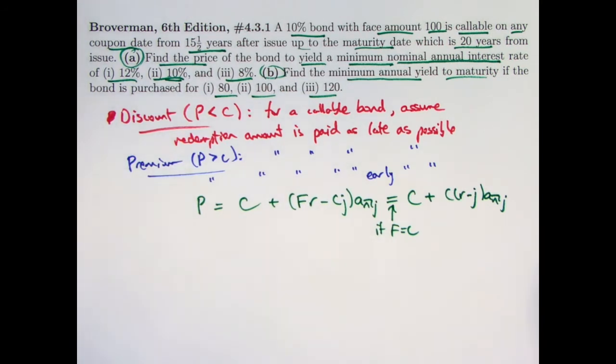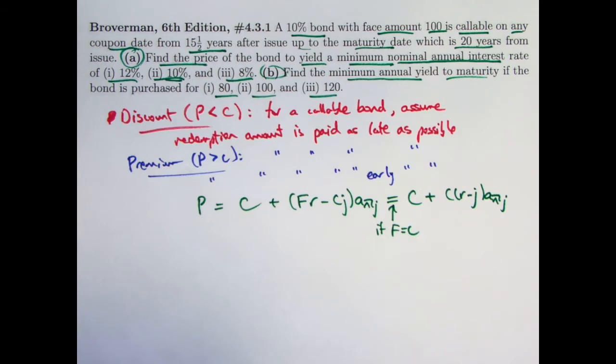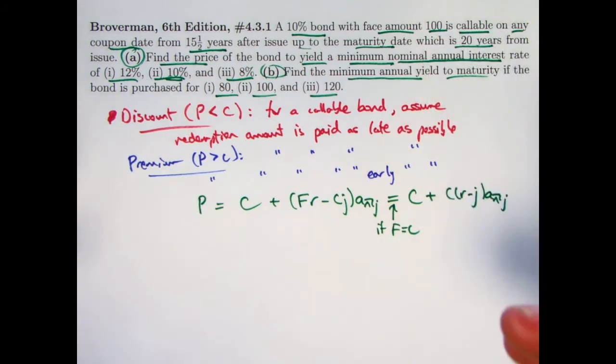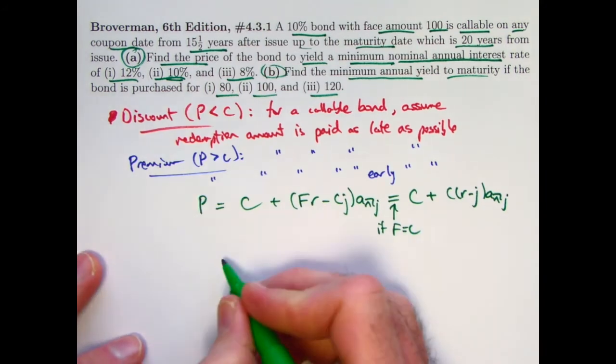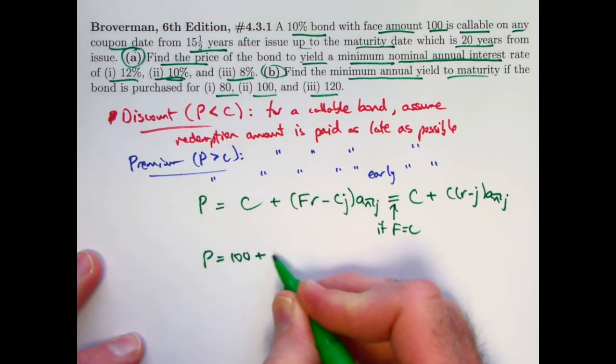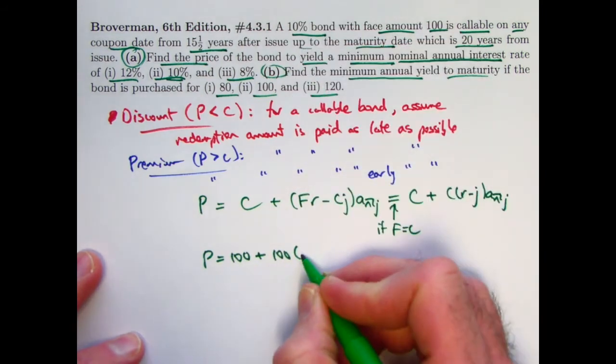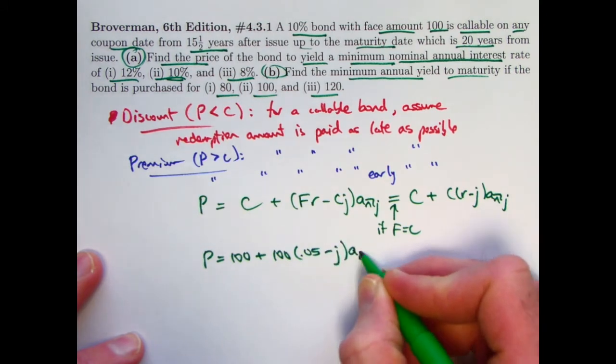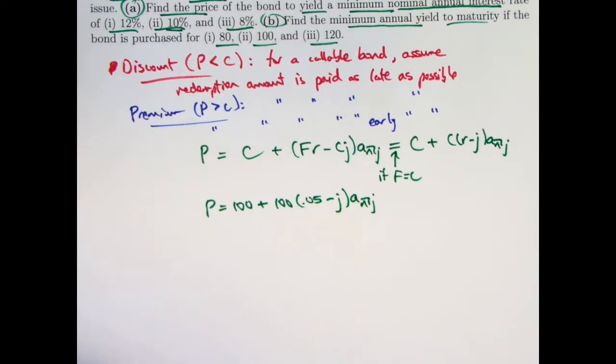You can make it more complicated by varying how much the redemption, how much is redeemed based on what n is. That could definitely make it trickier, and these simpler principles would not necessarily be what you want to go by, especially if it was different for every single possible value of n. That would be a real big pain. But for the simplest case, when the redemption value is the same, no matter when the bond is called, then this kind of analysis is fine. Let's go ahead and plug our numbers in. p would then be 100 plus 100 times r is half of 10%, 0.05. Let me leave j unspecified and n unspecified.